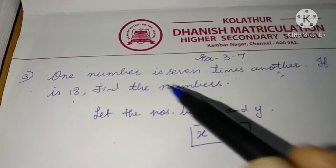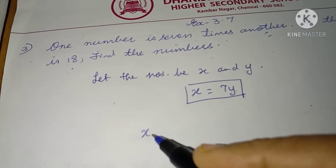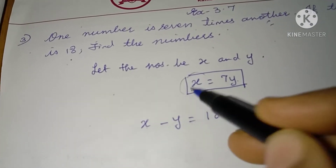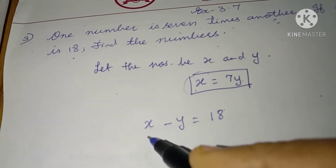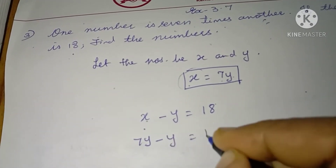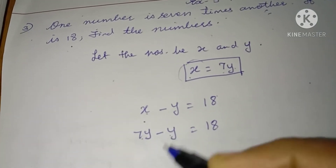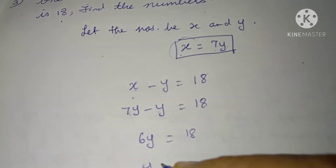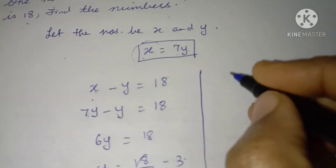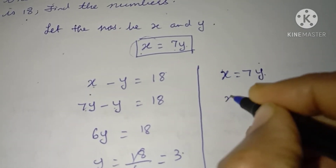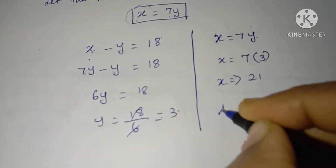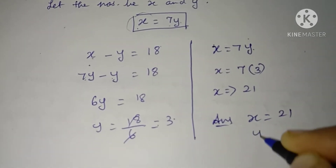If the difference is 18, difference means you have to subtract. So, x minus y is equal to 18. Substitute the value of x in the equation. Therefore, 7y minus y is equal to 18. 7 minus 1 is 6, so 6y is equal to 18. y equals 18 divided by 6, which equals 3. Now find x: x equals 7y, so x equals 7 into 3, which is 21. Therefore, your answer is x equal to 21, y equal to 3.